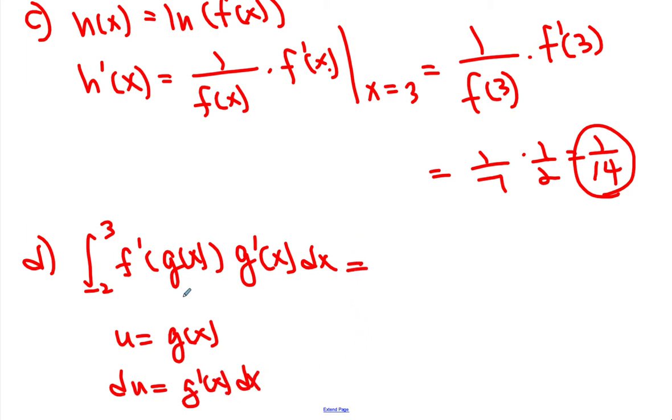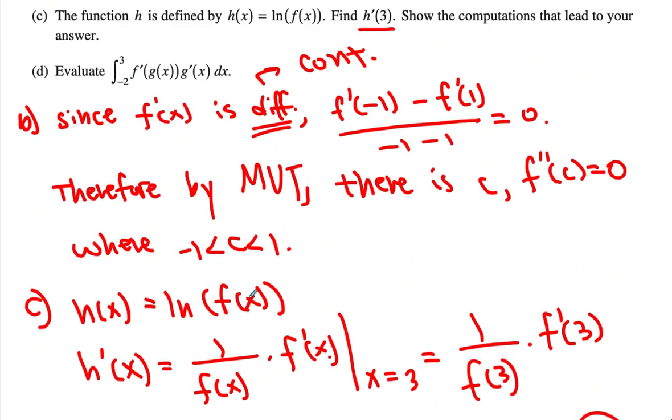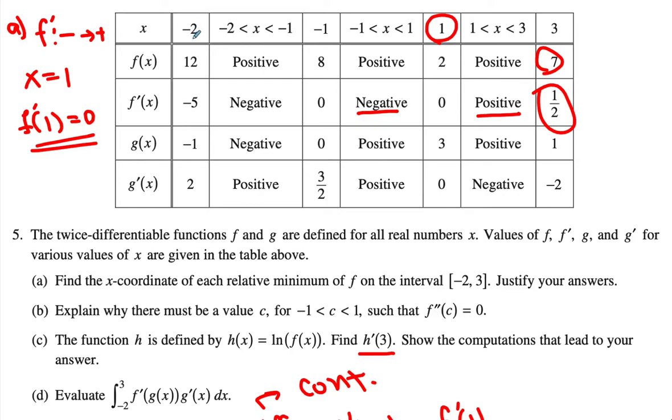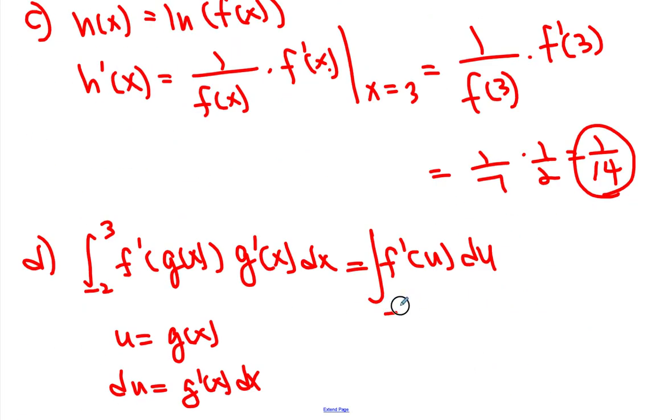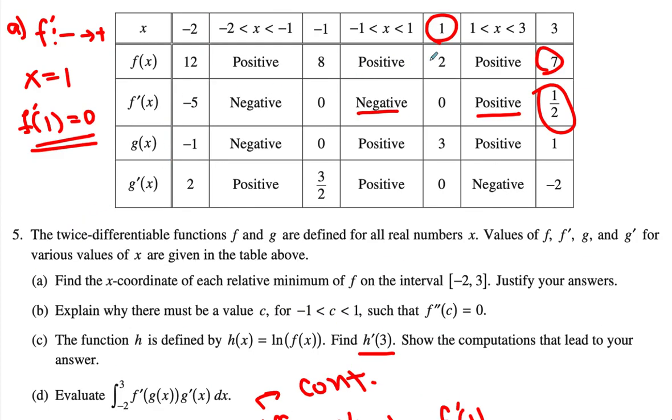So what we can do is this will be now equal to f' of u du. And then the lower boundary is when x equals negative 2 for g. So when x equals negative 2 for g, which is equal to negative 1, and when x is 3, then it becomes 1 here.